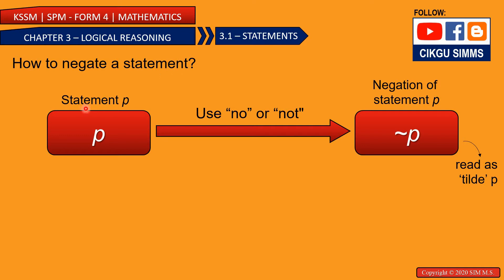This is a statement represented by P. You can negate this statement to become tilde P using this symbol. How to negate this statement? You can use the word no or not, so that your P will become tilde P. Tilde P means that it is the negation of statement P.